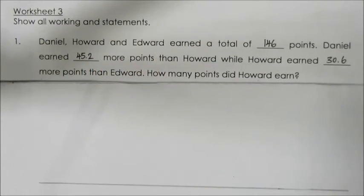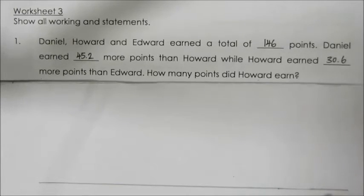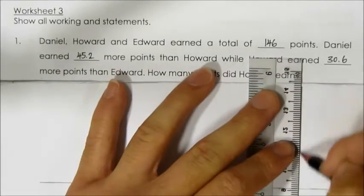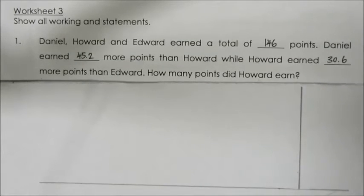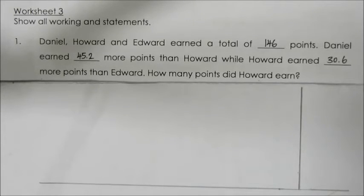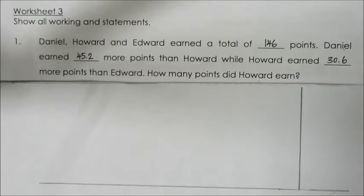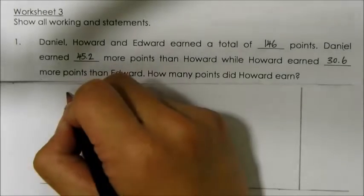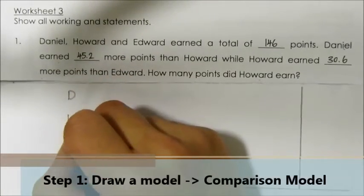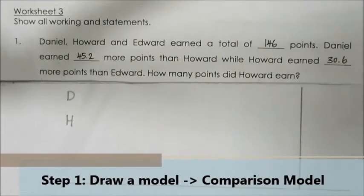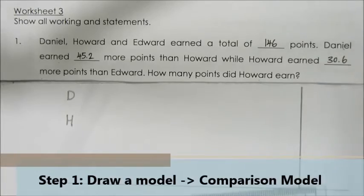In this question there are three different people: Daniel, Howard, and Edward. Before we begin, we always have to draw a line on the right-hand side to help us save some space for our working. We can use the letters to represent the different names in the question.